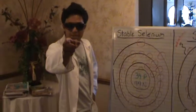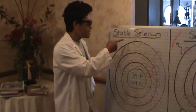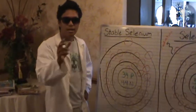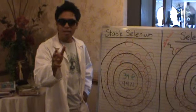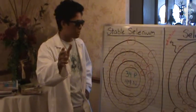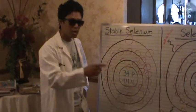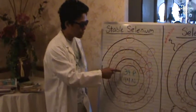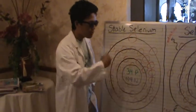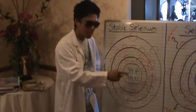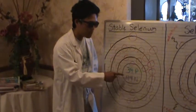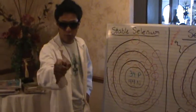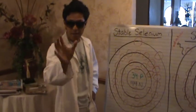Hello there chemistry students. This is stable selenium. Its mass number is 78 and its atomic number is 34. Therefore it has 34 protons, 34 electrons, and 44 neutrons. Remember that it has 44 neutrons.